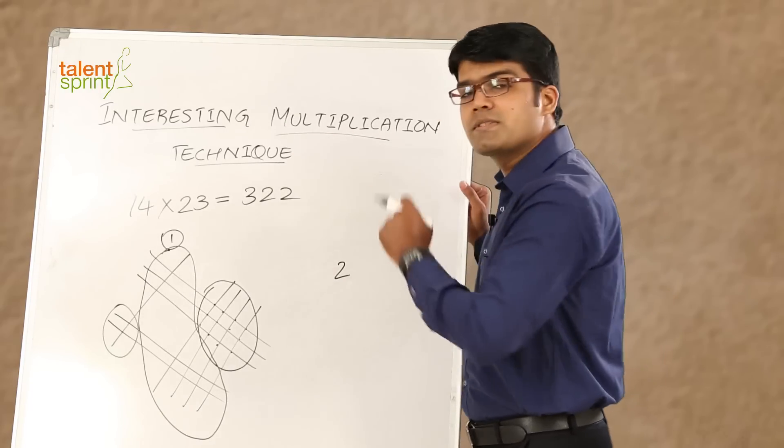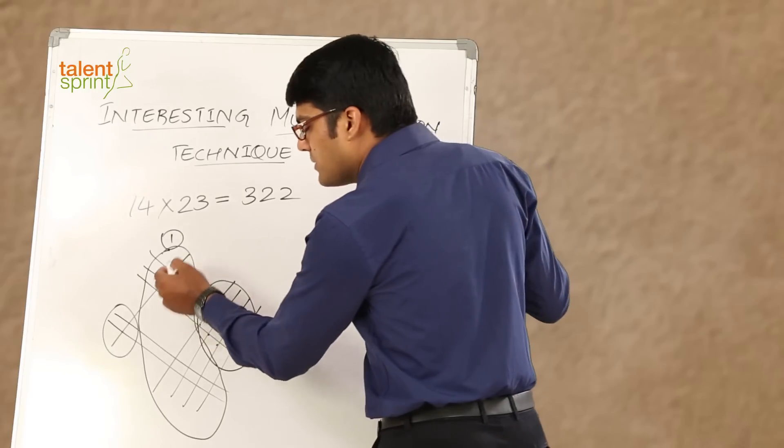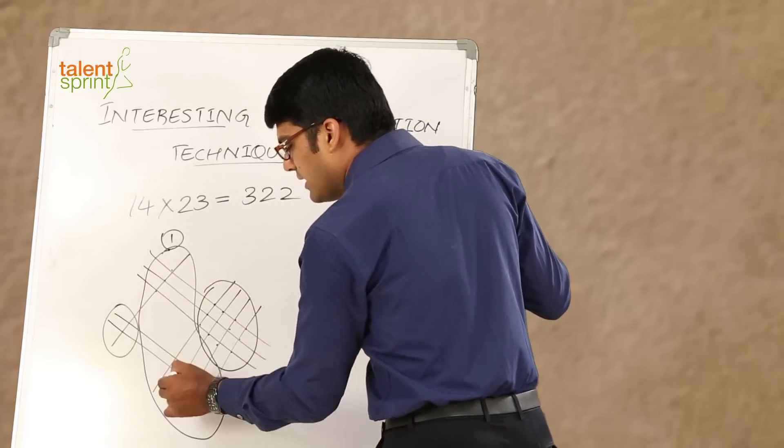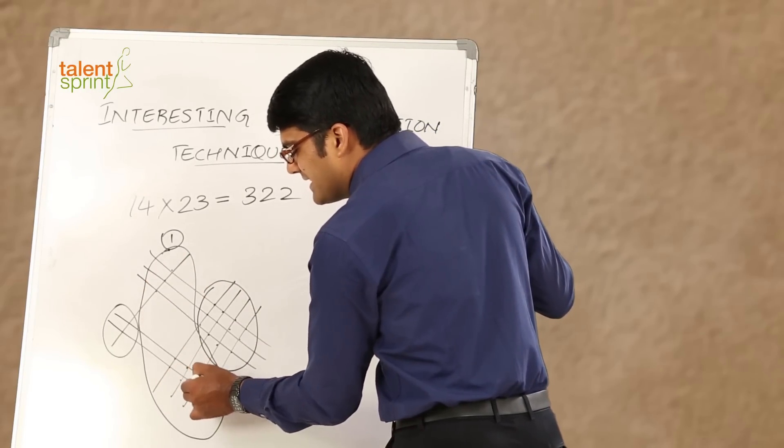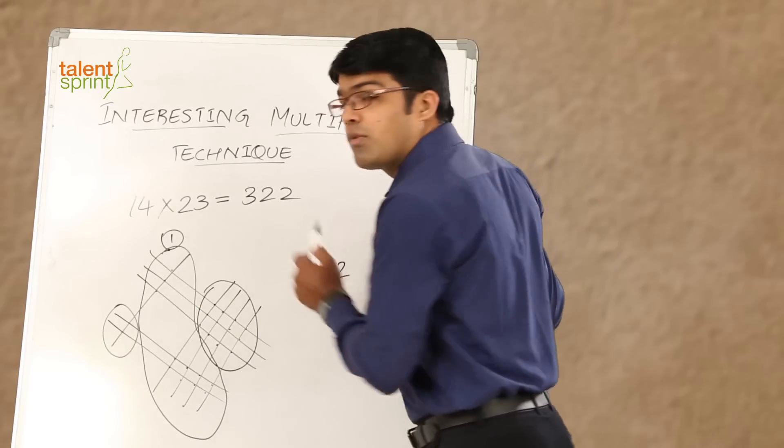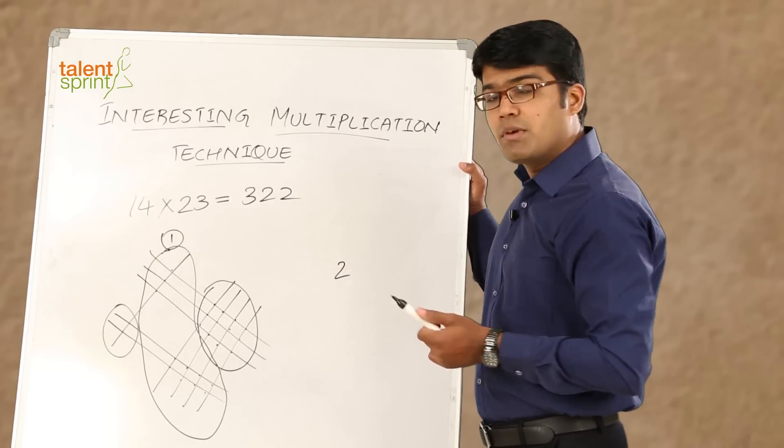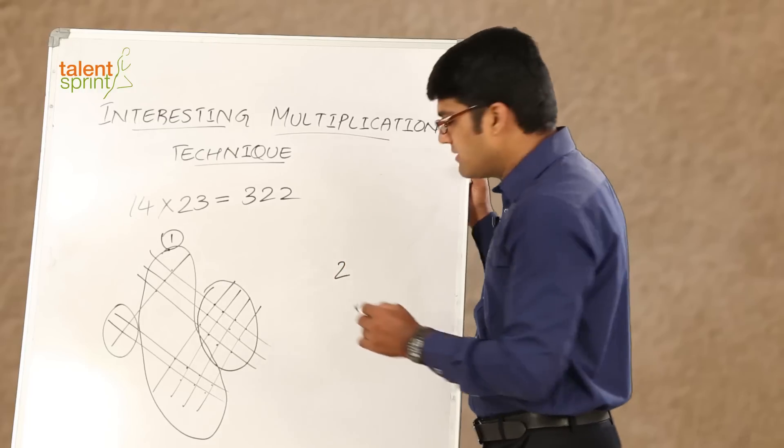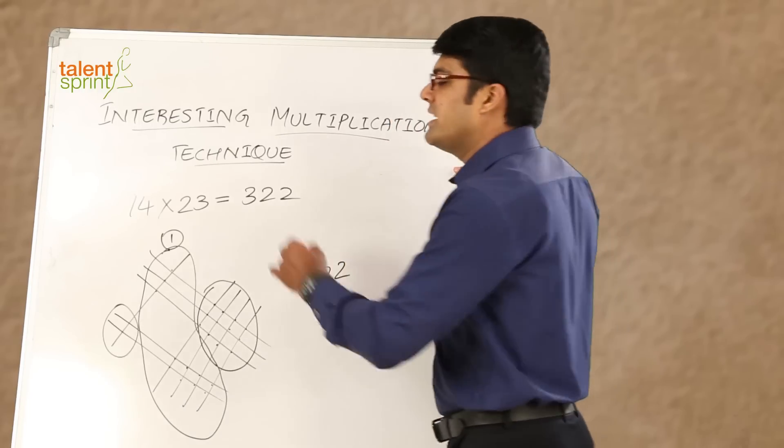Now count the points of intersection here: 1, 2, 3, 4, 5, 6, 7, 8, 9, 10, 11. 11 points of intersection and 1 has been carried forward. So 11 plus 1, 12 again. But we cannot take 12 in the tens place. Take 2 as the result and 1 gets carried forward to the next place.